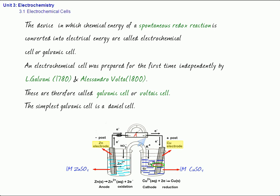The zinc electrode is the anode — it is the negative terminal, but it is the anode. Please remember, the negative and positive sign has nothing to do with anode and cathode. The copper electrode is positive, but it is the cathode. Anode is not the electrode where negative charge is accumulated; anode is the electrode where oxidation takes place. This definition is valid both in electrochemical cells and electrolytic cells. Anode is where oxidation takes place, and cathode is where reduction takes place. The anode is negative because electrons are accumulated on that electrode.